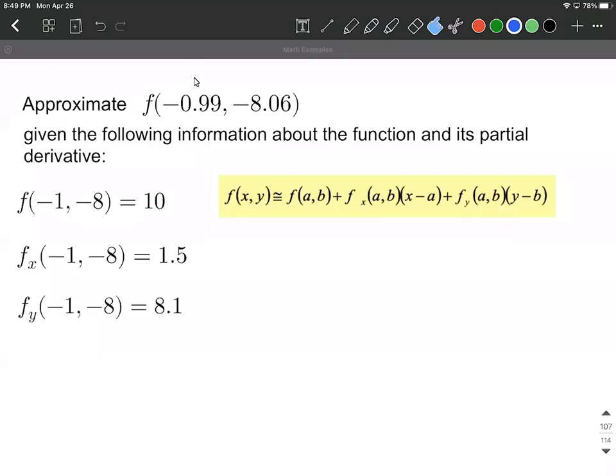Alright, let's do some approximating using partial derivatives. So what we have here is we want to evaluate f at negative 0.99 comma negative 8.06, but we're given information about a point that's very close to the one we're trying to approximate.